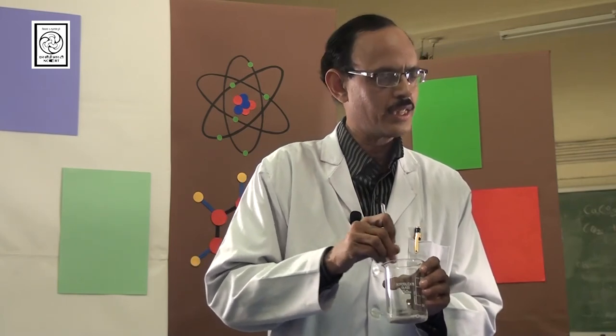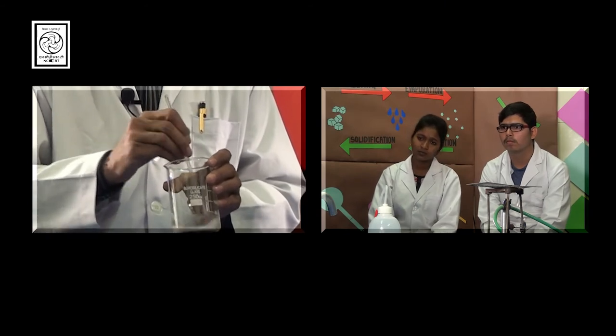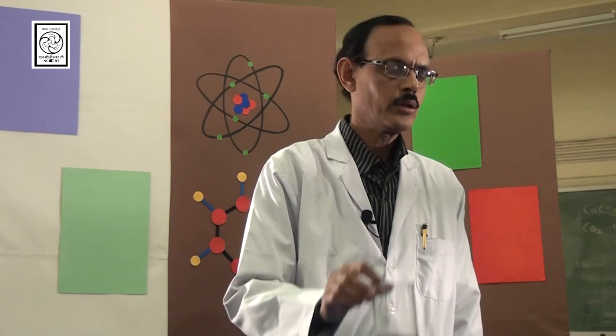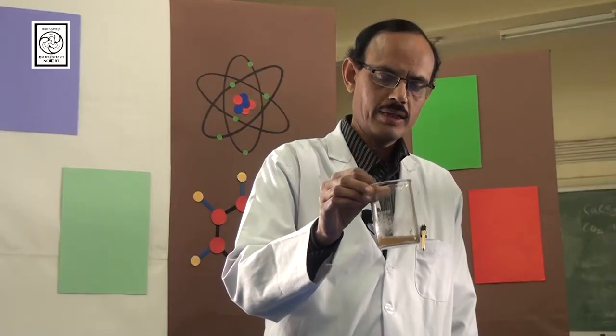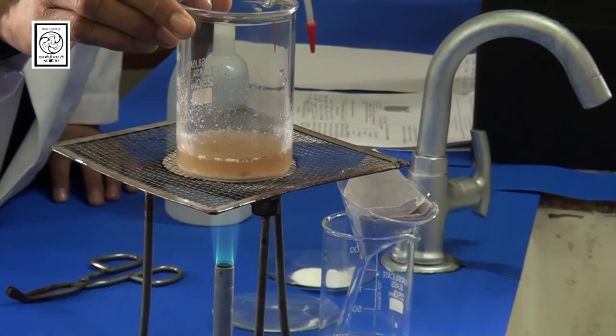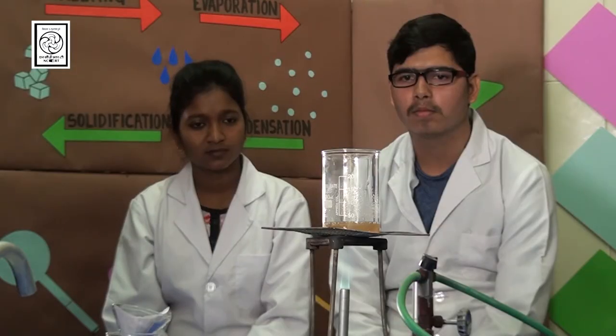Continuous stirring is done so that soluble part gets dissolved in it. Now look students, the solution of impure sample is prepared. Now let us heat it for some minutes. Solution is heated till saturated solution is obtained.